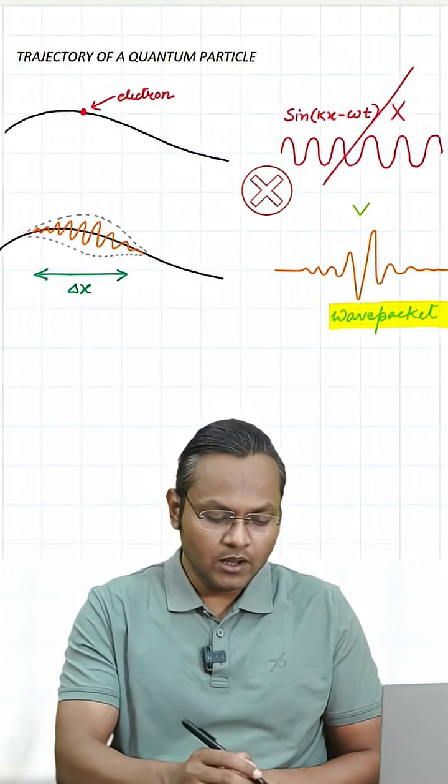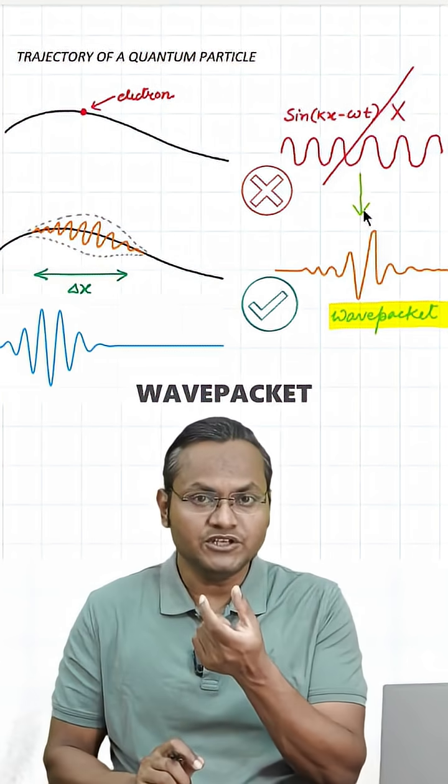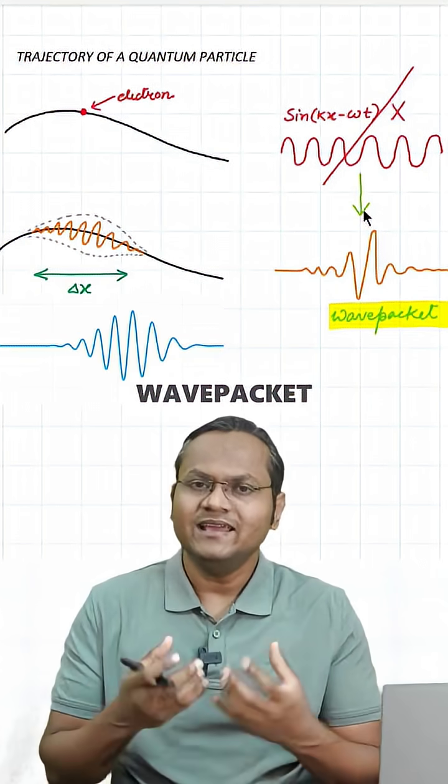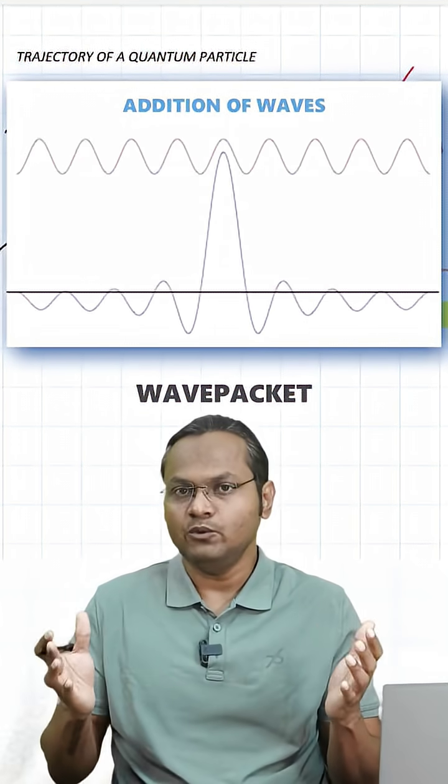Instead, we use something called a wave packet which has a finite amplitude in a small region in which the particle exists. लेकिन इस wave packet को generate करने के लिए we need to add a large number of sine waves with different wavelengths.